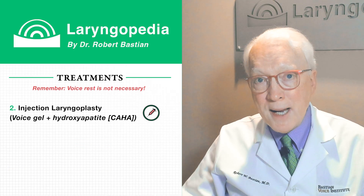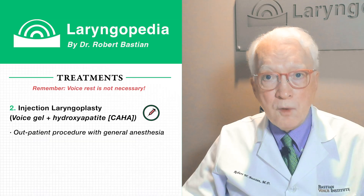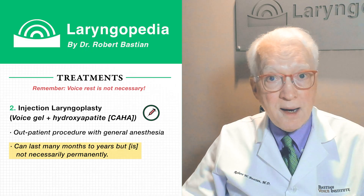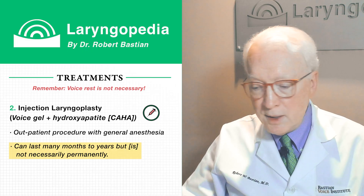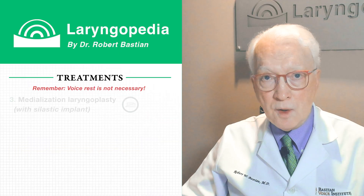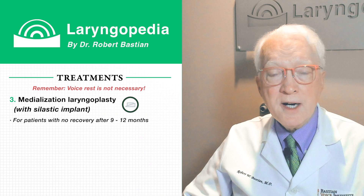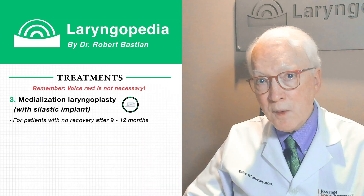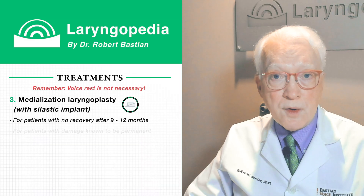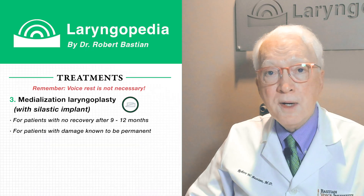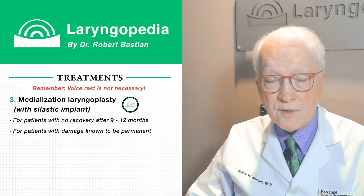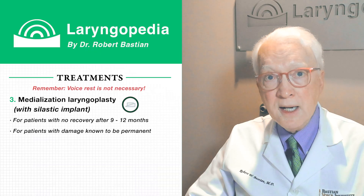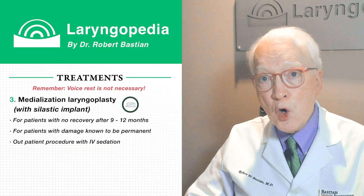Alternatively, we can inject a paste material — something much more long-lasting. It's said to be permanent, but usually eventually begins to fade after a year or two, and it can be redone. The definitive option is called medialization laryngoplasty. If there's no recovery after nine to twelve months — with or without voice gel injections — or if we know the nerve is irreparably damaged, a permanent implant can reposition the paralyzed vocal cord to the midline. This is performed in an outpatient operating room with no hospital stay.